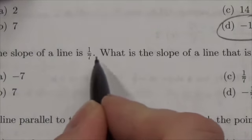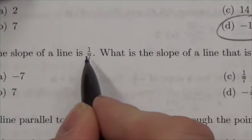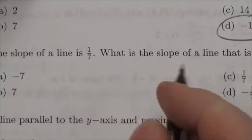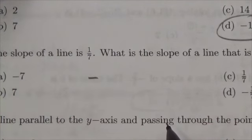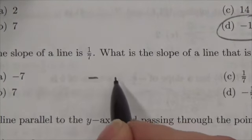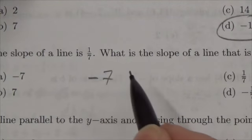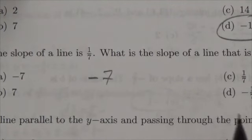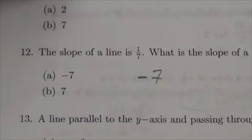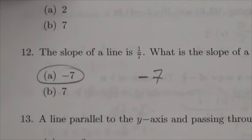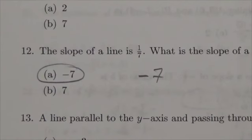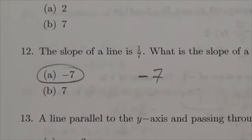The slope here was positive 1/7th. So I know that it's going to be negative and then I'm going to have to reciprocate this, so negative 7. Just look at my options here and it's the very first one. The slope must be negative 7.